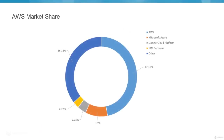The market share of AWS is the highest — at 47.10%, it is even more than Microsoft Azure, Google Cloud Platform, IBM Software, and all others combined, which total 36.18%. According to Gartner, AWS will continue to lead the market in the coming years.